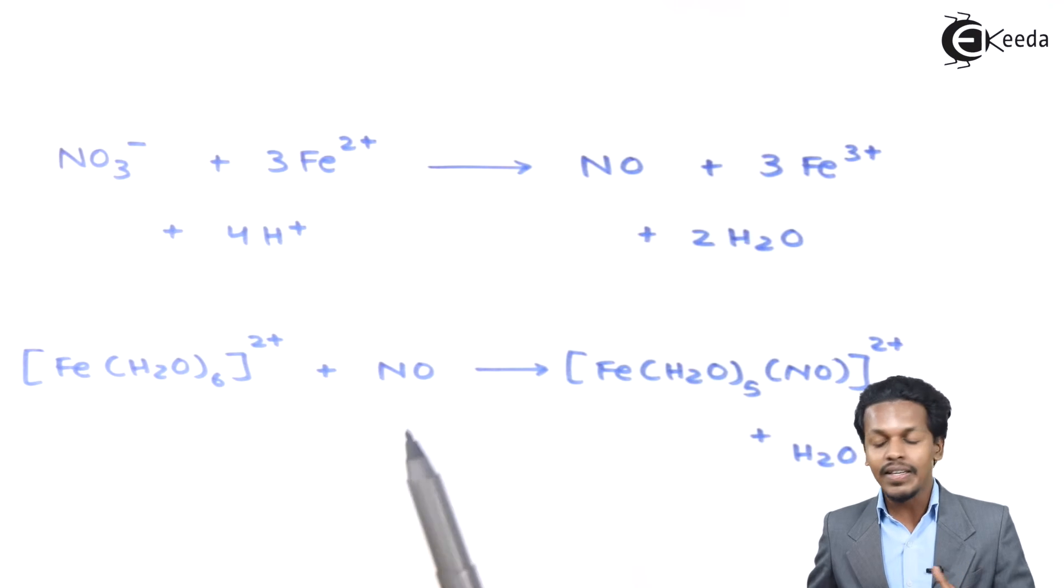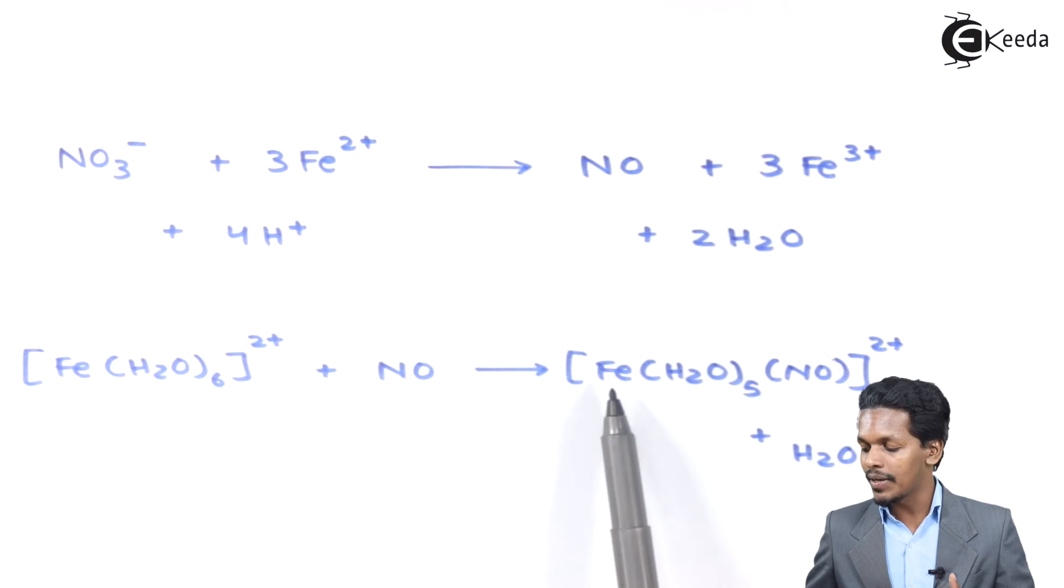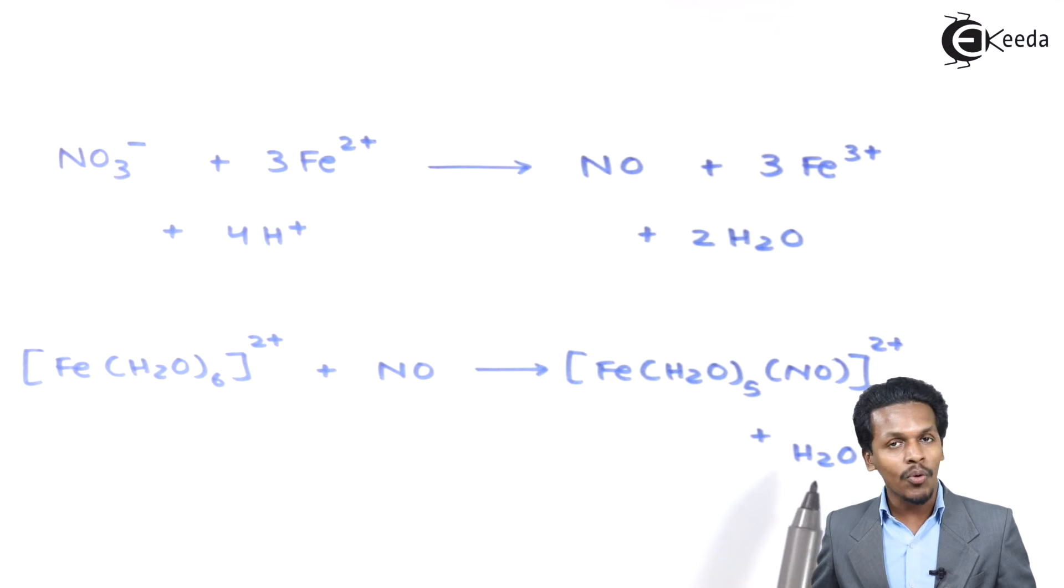a complex is produced, which is Fe(H2O)5(NO), along with a water molecule. The complex that has been produced is brown in color.